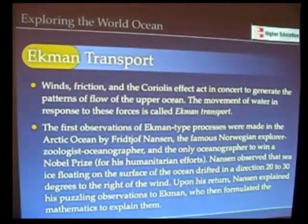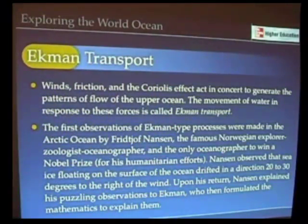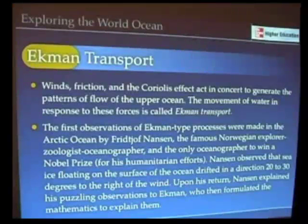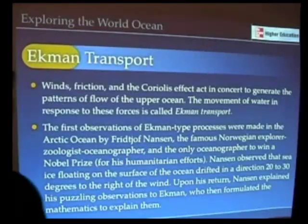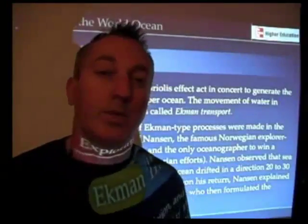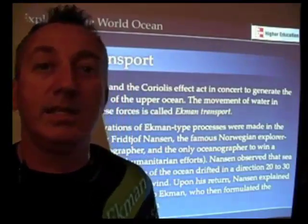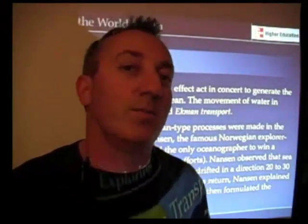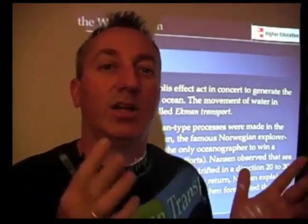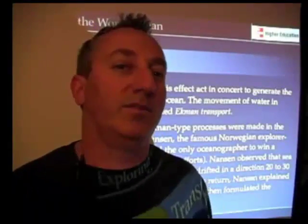But as it turns out, Nansen wasn't only just famous as an oceanographer and as a polar explorer, but he was also the only oceanographer, the only oceanographer, to ever win a Nobel Prize. He won a Nobel Peace Prize and he didn't win it for his oceanography, so maybe that's kind of cheating, calling an oceanographer a winner of a Nobel Peace Prize.